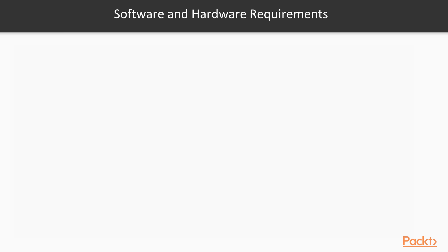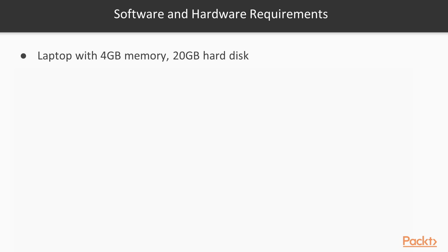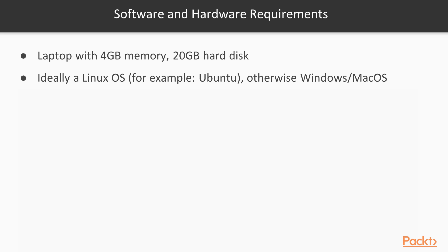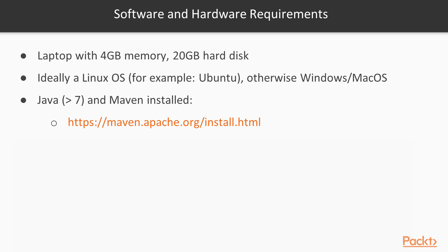In order to be able to follow our practical parts and have the best experience, I'd recommend that you do the following. You will need to have a laptop with a memory of 4GB and a disk of 20GB minimum. A less powerful machine might still be adequate, but running our examples might be a bit slower. We'll use an Ubuntu Linux operating system for our examples, so it would be ideal if you have the same one. However, other operating systems can work fine, as long as you've installed the tools in the right way for your operating system. You must have Java and the Maven tool installed in your machine, with Java being version 7 or later.